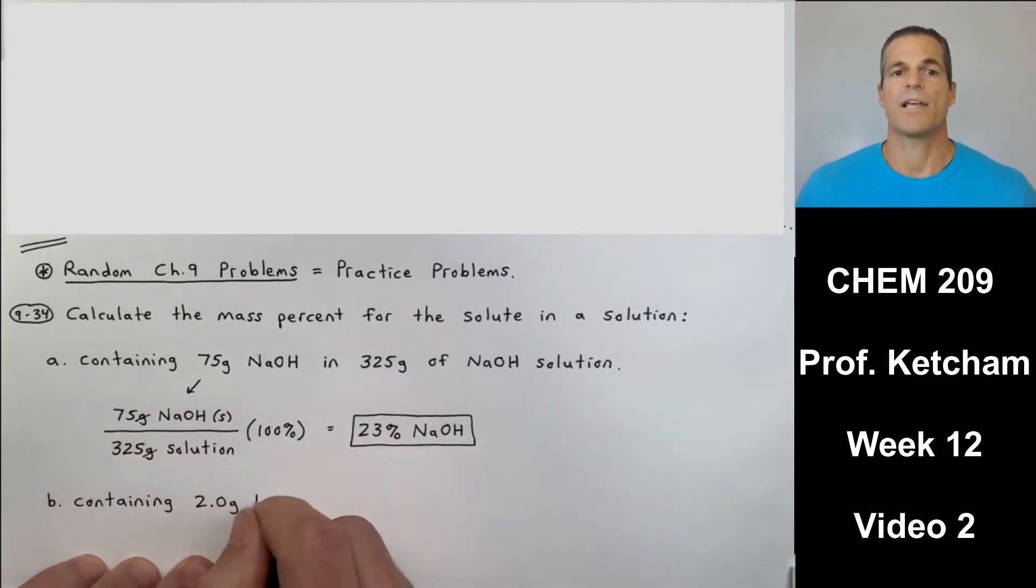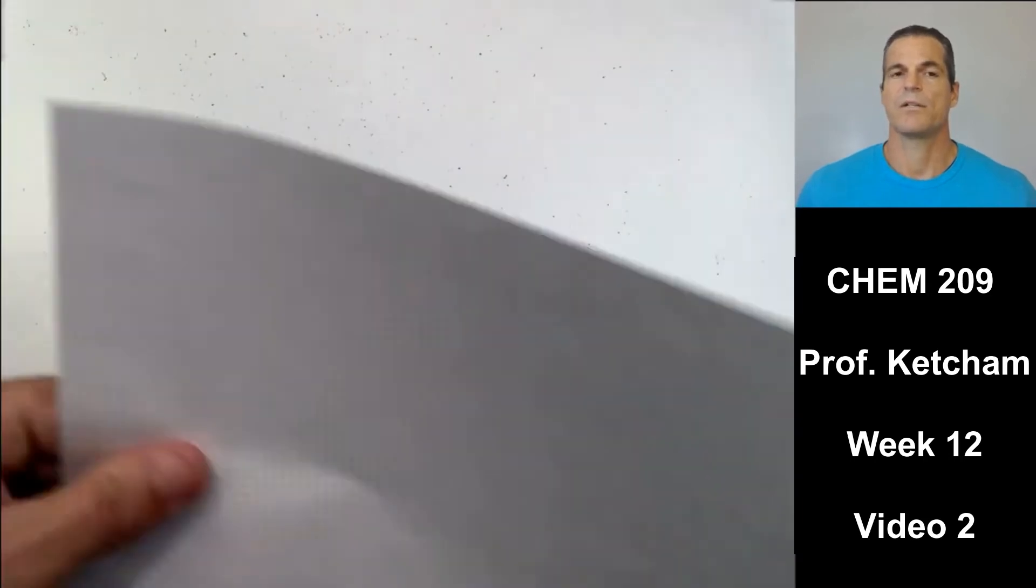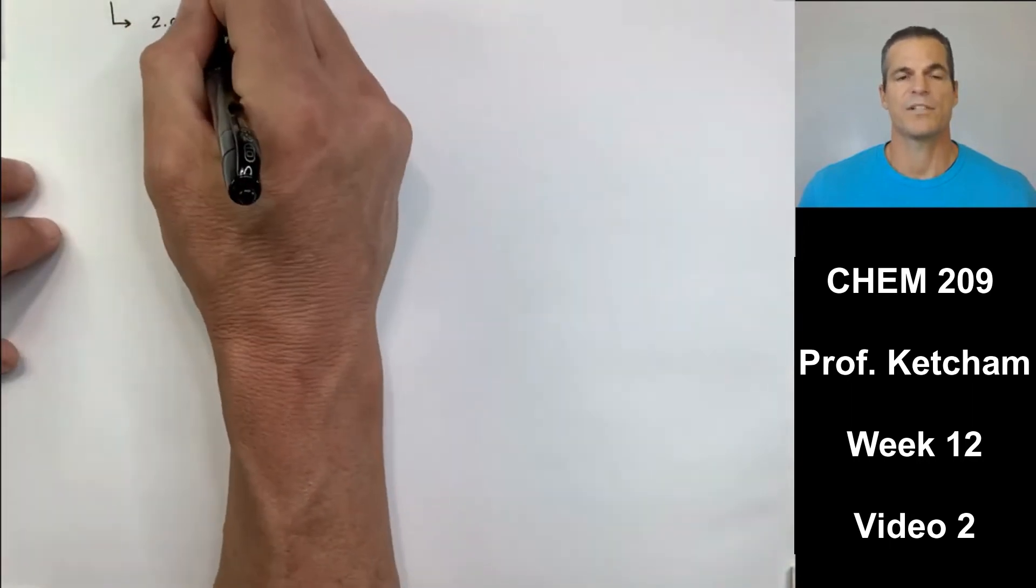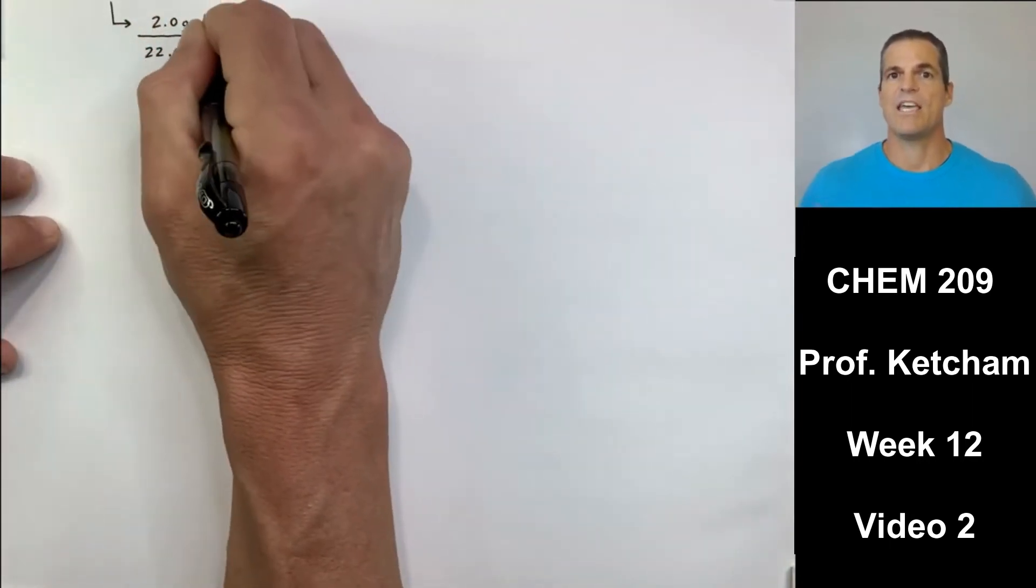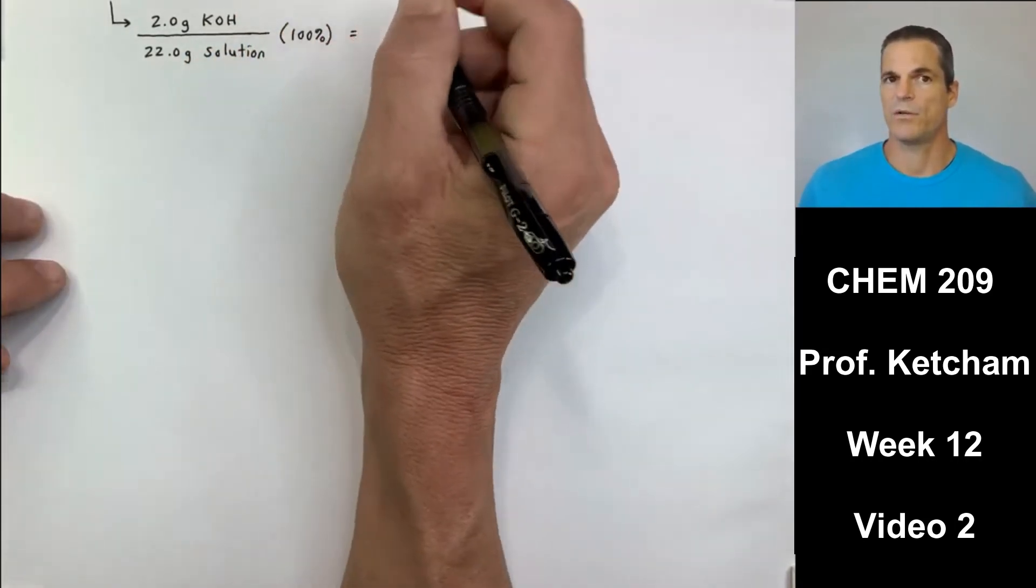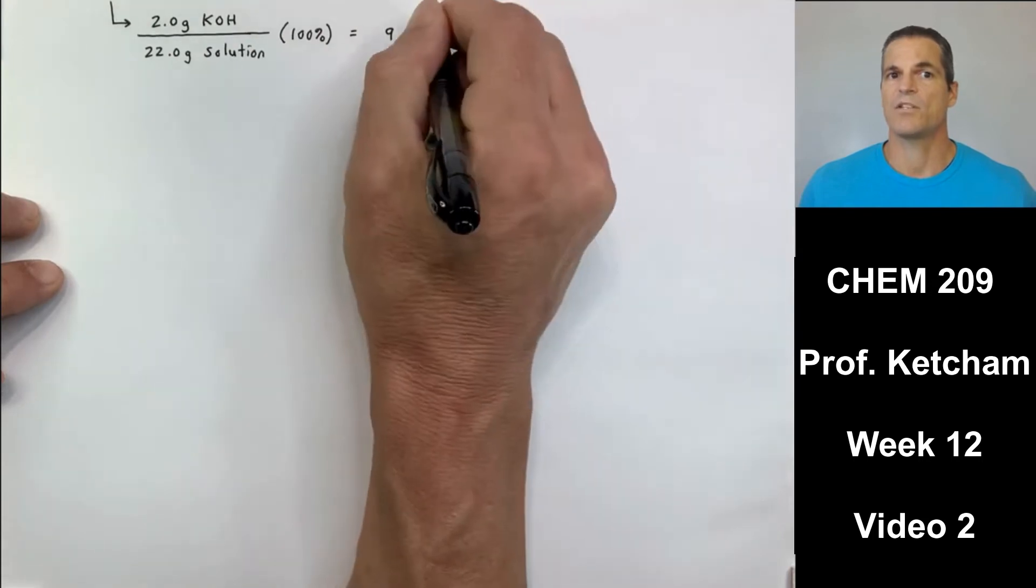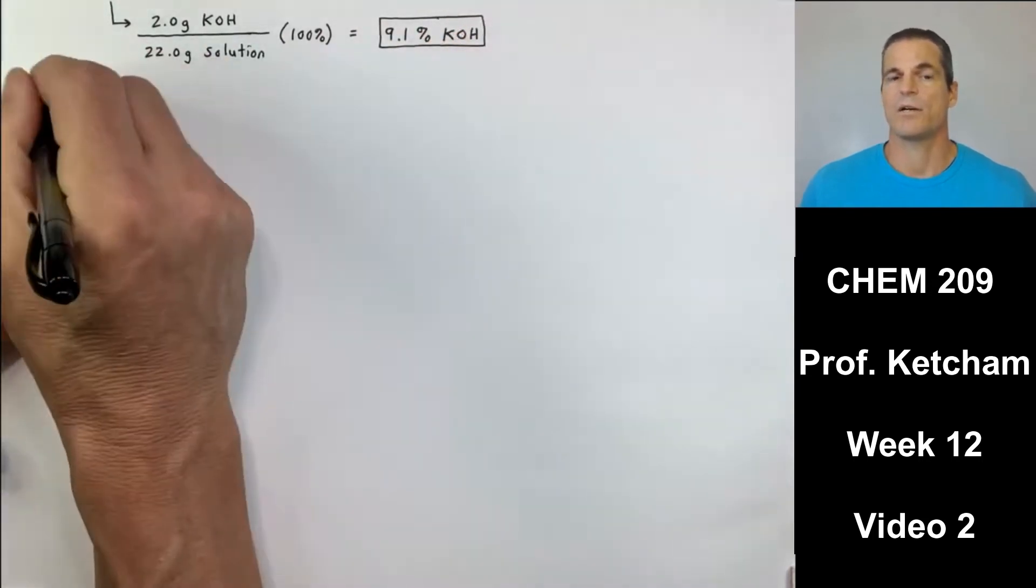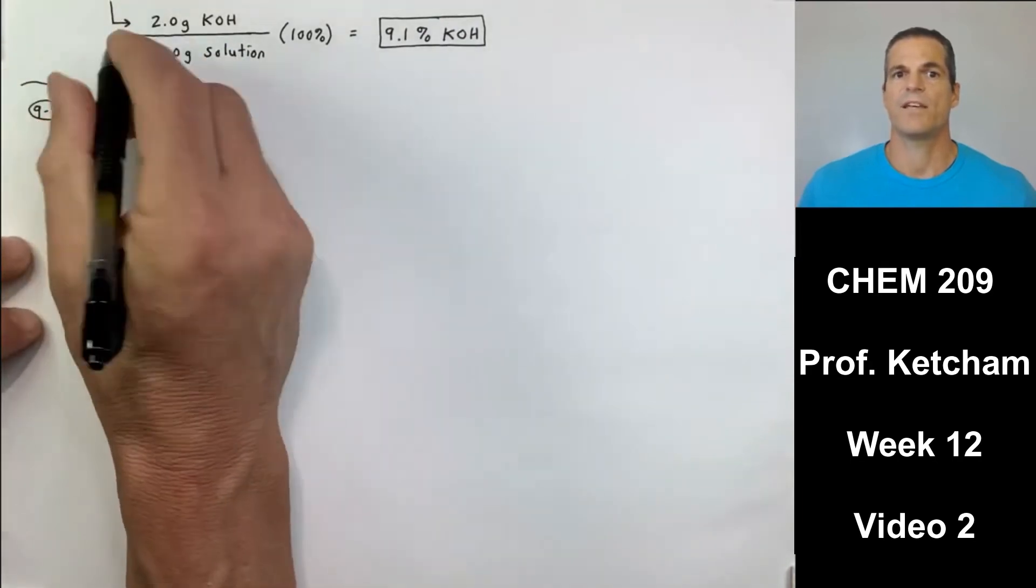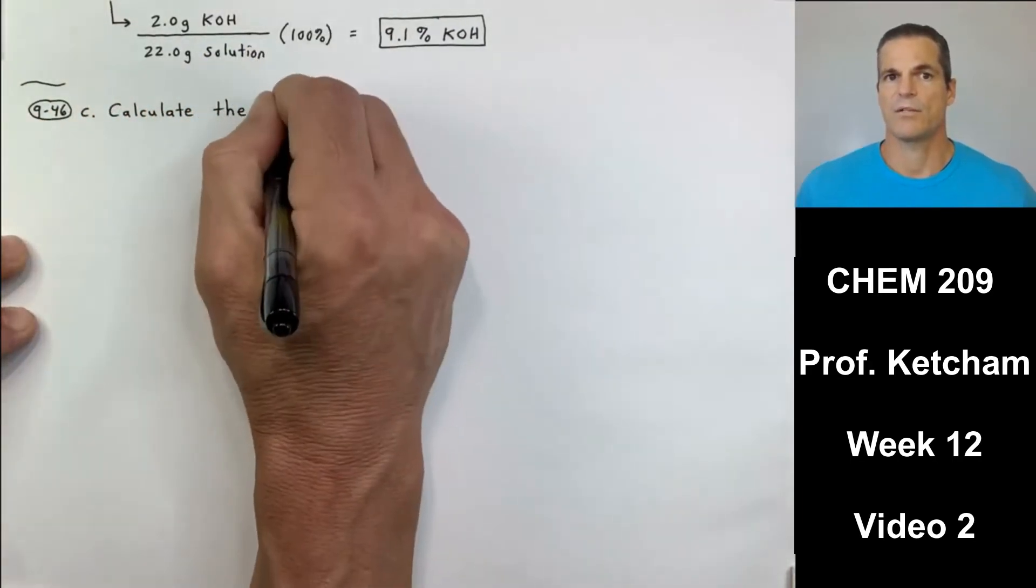So we also want to calculate the mass percent for the solute in a solution containing 2.0 grams KOH and 20.0 grams of water. Note that it says 20.0 grams of water. Water is the solvent. The solution is a KOH solution. That's why my denominator here is 22. So the solution is the 2 grams of KOH plus the 20 grams of water. 2 divided by 22 times 100. Two sig figs. 9.1 percent KOH.